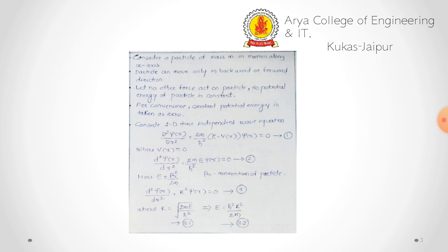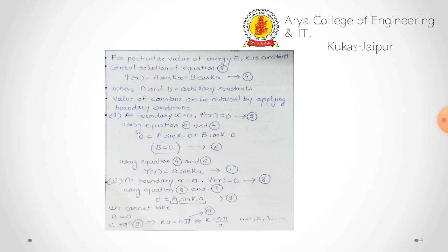Here k is defined as k = √(2mE)/ħ, which can also be written as E = ħ²k²/2m. For a particular value of E, k is constant — as E changes, k will also change. The general solution to this differential equation is ψ(x) = A sin(kx) + B cos(kx), where A and B are arbitrary constants.